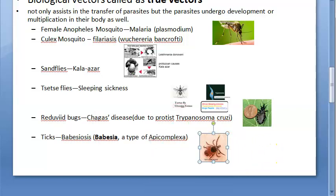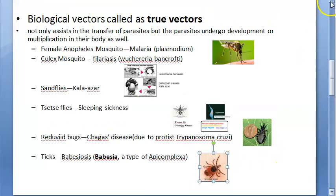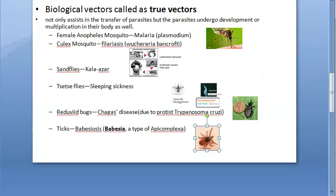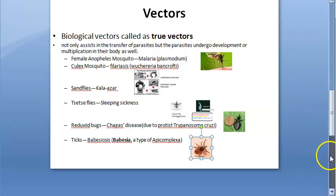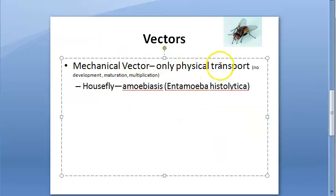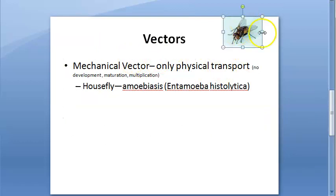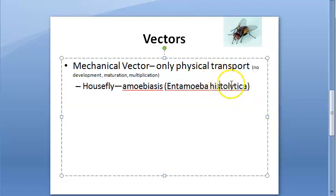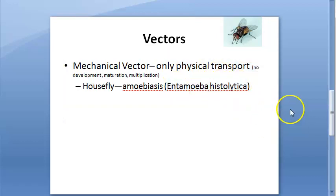These are the biological vectors — they are true vectors. Now let's move on to mechanical vectors. Mechanical vectors only physically transport the parasite. For example, the housefly transmits amoebiasis, caused by Entamoeba histolytica, which is an amoeba — a protozoan.